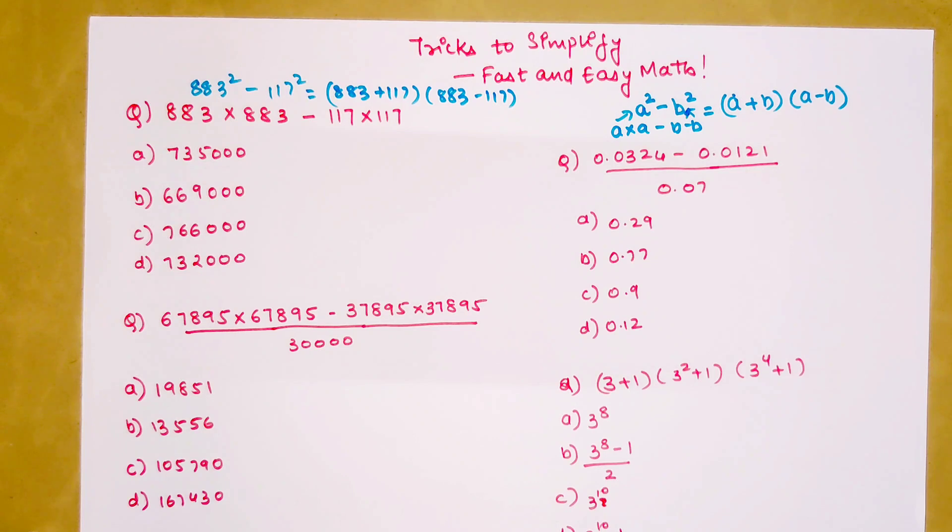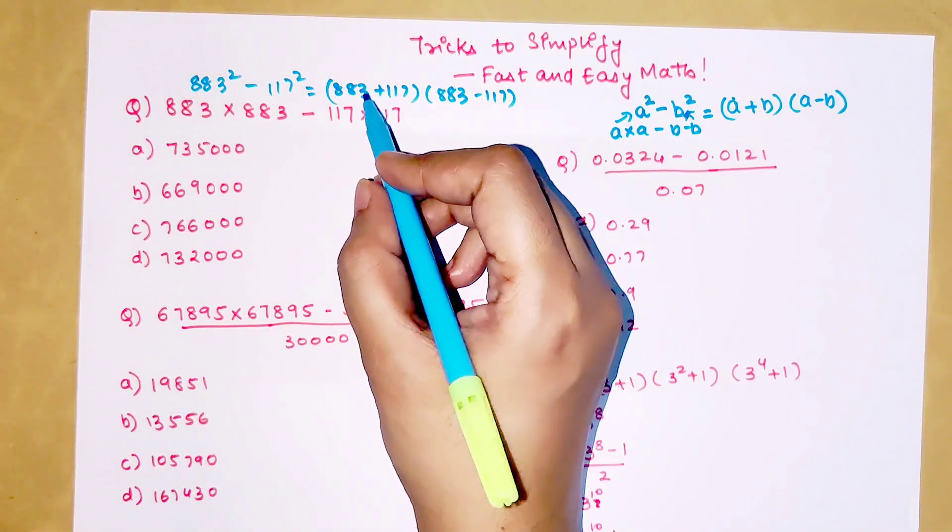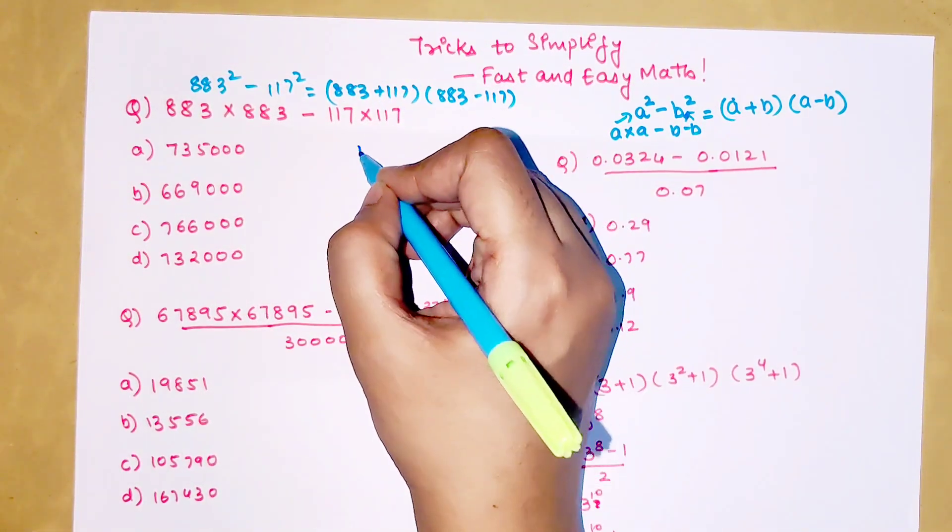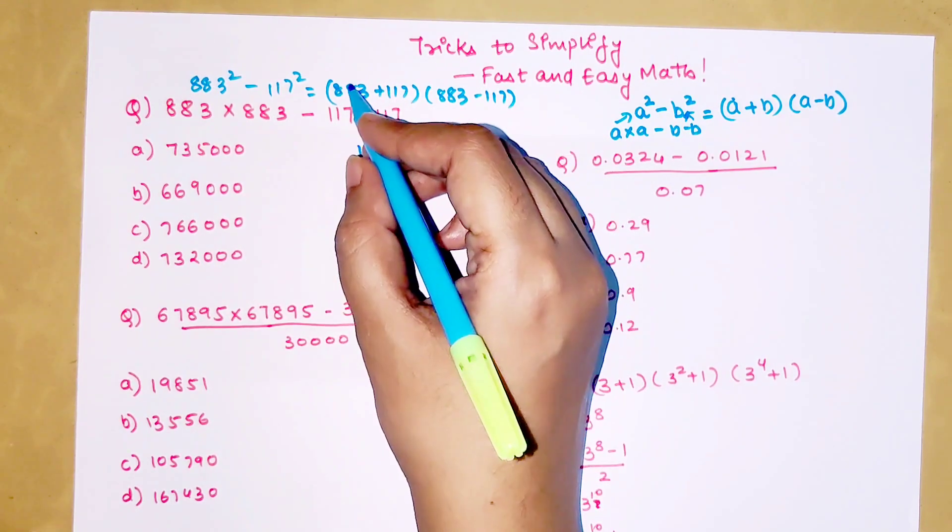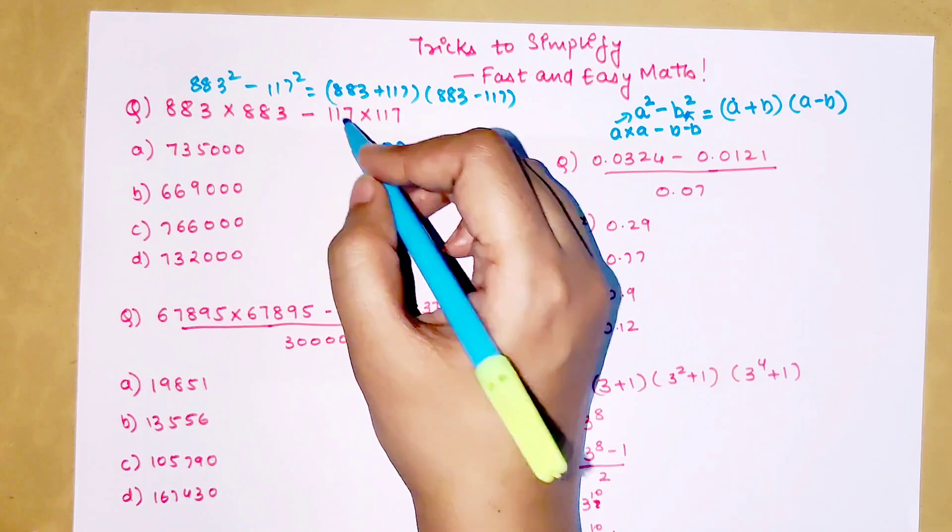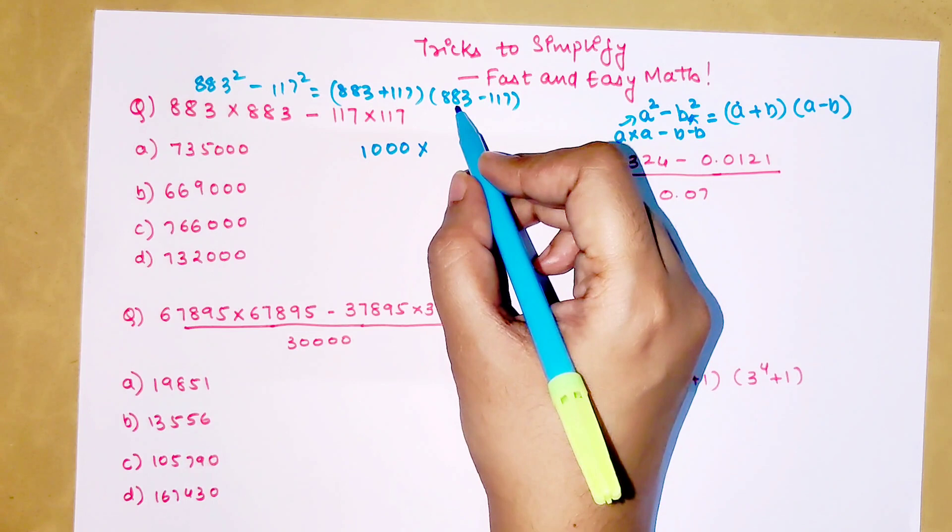You might be wondering this is also not small, like you have to add and subtract and then multiply, but trust me it is very simple. When you add all of it you get 1000. 7 plus 3 is 10, one carry, so 9 plus 1 is 10, one carry, 9 plus 1 is 10.